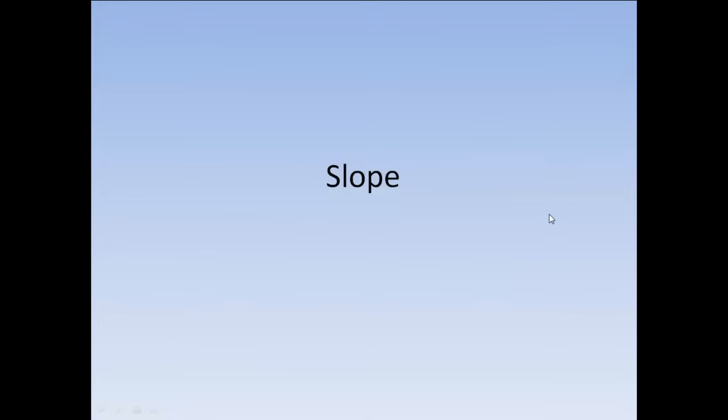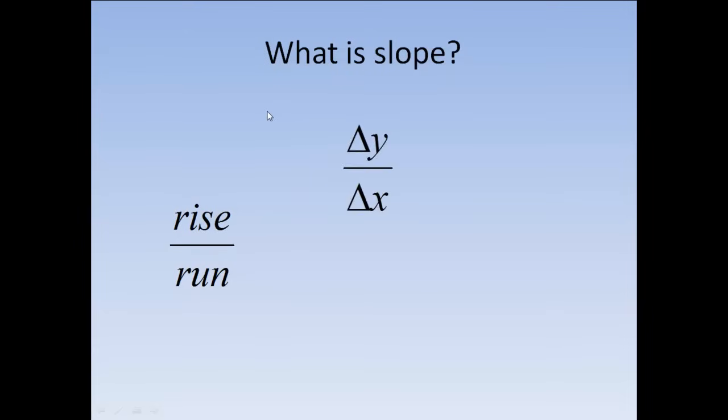We are going to look at just the very basics of slope and how to find it. When you hear the word slope, one thing that might come to mind is rise over run. That's a lot of times what people start with when they are talking about slope. You might also think about delta y over delta x. This delta is a Greek letter and it usually represents change in, so it would be change in y over change in x.